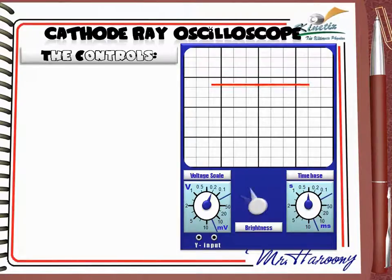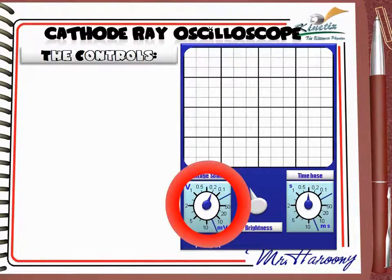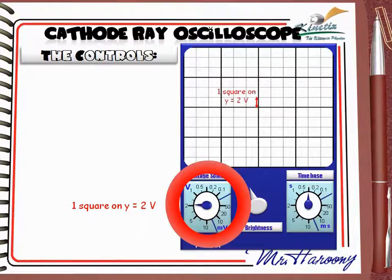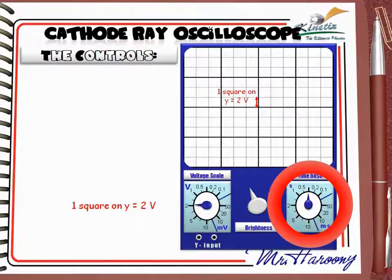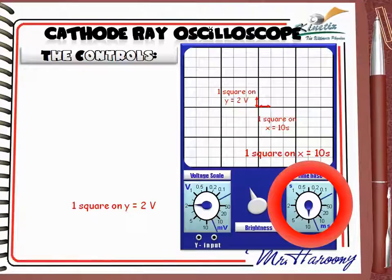زرار الـ Brightness بيتحكم في شدة إضاءة وقوة ظهور السيجنال. الـ Voltage Scale أو الـ Y Gain لو مظبوط على 2V، معناه كل square على الـ Y axis تمثل 2V، يعني 1 square on Y equals 2V. بنفس المعنى، الـ Time Base لو مظبوط على 10 seconds، معناه كل square على الـ X axis يمثل 10 seconds، يعني 1 square on X equals 10 seconds.